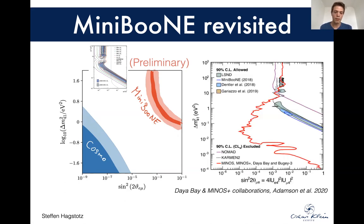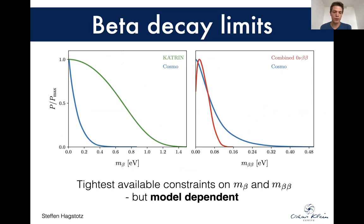There's also new data out just last week from Daya Bay and Minos. These are oscillation experiments, and they also find that large parts of the MiniBooNE regions are excluded by the new data. So something in MiniBooNE seems to still be very weird. But again note that the cosmological limits are way stronger than even these new results. We can also translate the cosmological limits to the parameters probed by beta decay and neutrinoless double beta decay. They are slightly model dependent, but they're way stronger than the current limits. The model dependence is not very strong — to accommodate something like N_eff of four, you have to modify your cosmological model very, very strongly.